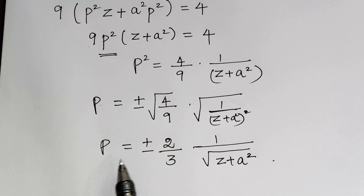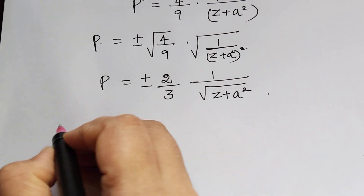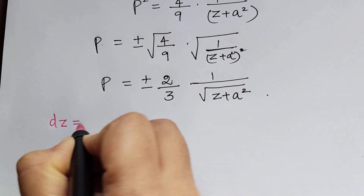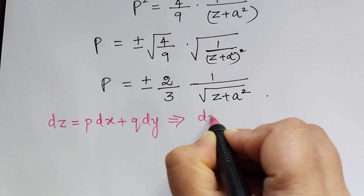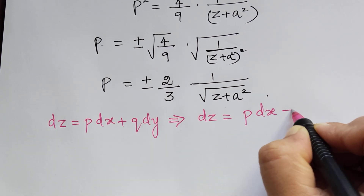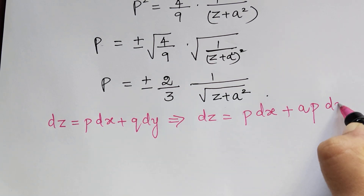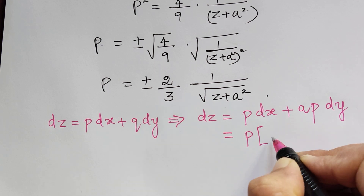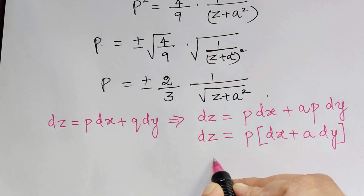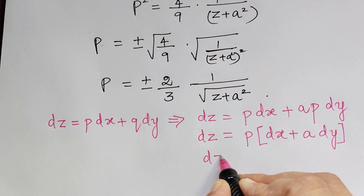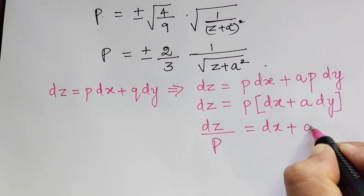After finding the value of p, we substitute it into the equation dz equals p dx plus q dy. Since q equals ap, this becomes dz equals p dx plus ap dy. Taking p common, it becomes dz equals p times (dx plus a dy). Dividing both sides by p, we get dz divided by p equals dx plus a dy.